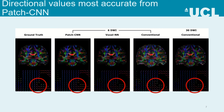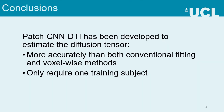All of these results are backed up with quantitative measures. To conclude, we propose PatchCNN, a method for estimating the diffusion tensor that is more accurate than conventional fitting and voxel-wise machine learning, and is clinically viable, as it requires only one training subject. If you're interested in this work, would like to see more results or discuss the methods in more detail, then please come and chat to me at the poster session.